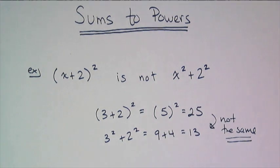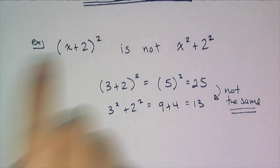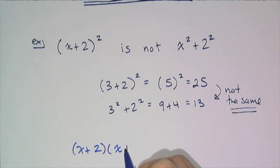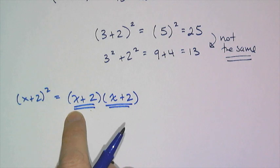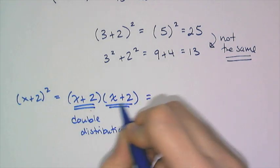You don't just sprinkle the exponent - there's actually something missing. In order to figure out what's missing you have to understand what (x+2)² is really asking. So (x+2)² is really (x+2) times (x+2), a double distribution.